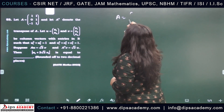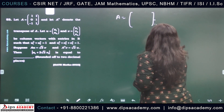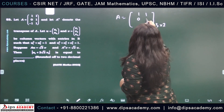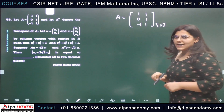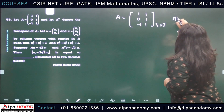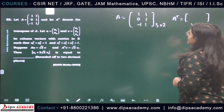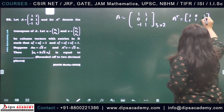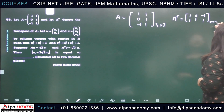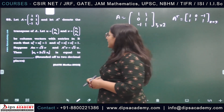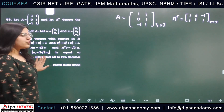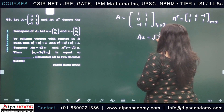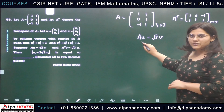A is a 3×2 matrix: A = [[1, 1], [0, 1], [-1, 1]]. And A transpose is a 2×3 matrix. Now, we have given that A·u = √2·v, where u and v are not the same vector.